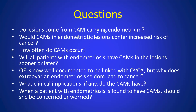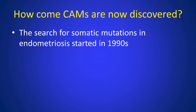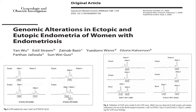What clinical implications do CAMs have? And when a patient with endometriosis is found to have CAMs, should she be concerned or worried? These are all very practical questions. To understand this, we have to understand how CAMs were suddenly discovered. The search for somatic mutations in endometriosis actually started in the last century, during the early 1990s. We used a CGH technique to report genomic alterations in ectopic and eutopic endometrium in women with endometriosis.